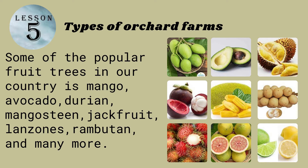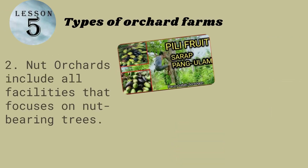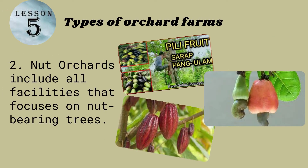Citrus trees such as pomelo, lemon, lime, or orange may be grown in large citrus orchards or individually in smaller areas. Number two: nut orchards include all facilities that focus on nut-bearing trees. The tree nuts that are popular in our country are cashew nuts and pili nuts. This category also includes coconuts and cacao.